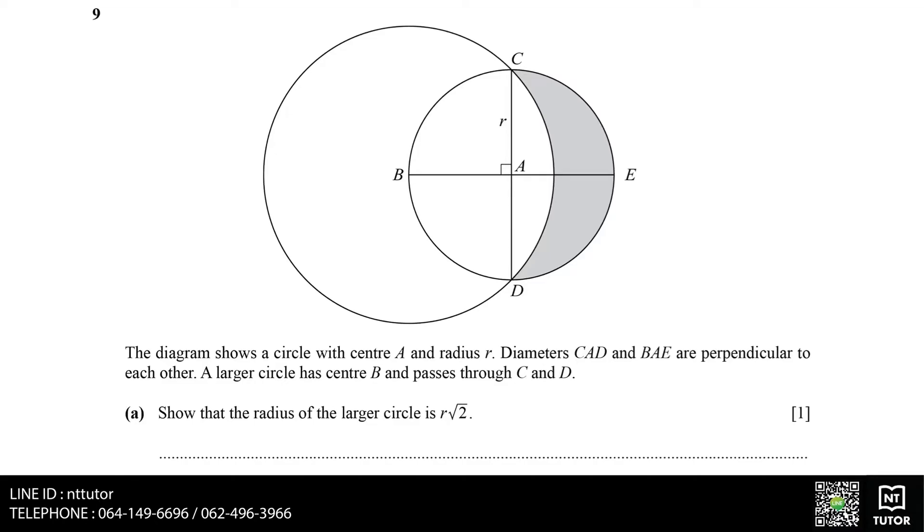The diagram shows a circle with center A and radius R. Diameters CAD and BAE are perpendicular to each other. A larger circle has center B and passes through C and D.